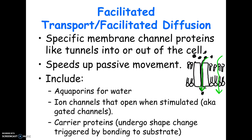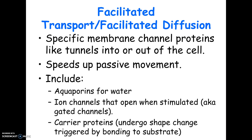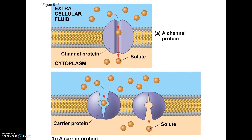If it's active transport — which we're going to talk about next — you'd be going in the opposite direction, from low to high, and in the picture you'd actually see ATP, which is the cell's energy source. Here are a couple of pictures of facilitated diffusion — notice the substances going through a protein from high to low.